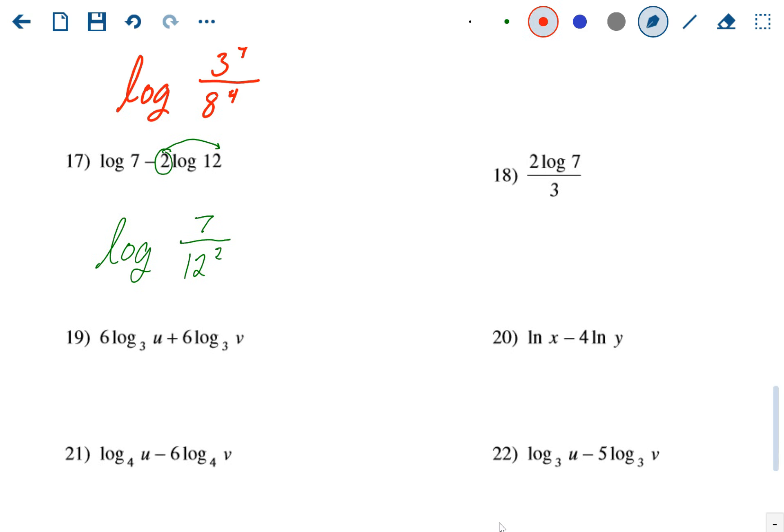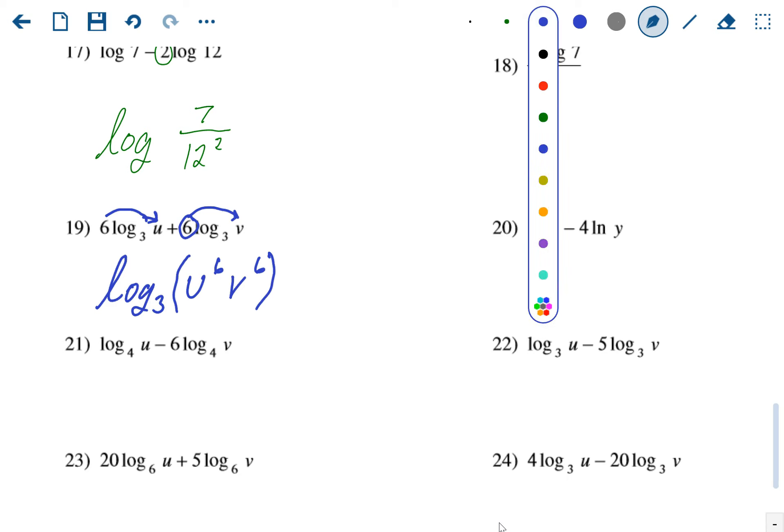Next one is the first one with addition, so this is going to be a multiplication problem. We're going to have 1 log. This one does have a base of 3, and then we're going to move the numbers out front as exponents. So it's going to be u to the 6th times v to the 6th. You can put these in parentheses if you want, you don't have to. Problem 21: log base 4, you have u on top divided by v to the 6th on the bottom.